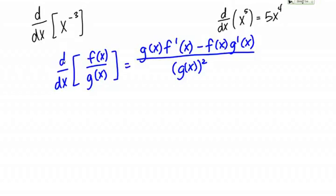Let's see if we can apply that to x to the negative 3. First of all, currently this isn't set up as a quotient, but if we remember the rules of exponents, that we can make a negative exponent positive by moving it to the denominator, then we can easily express x to the negative 3 as a quotient.